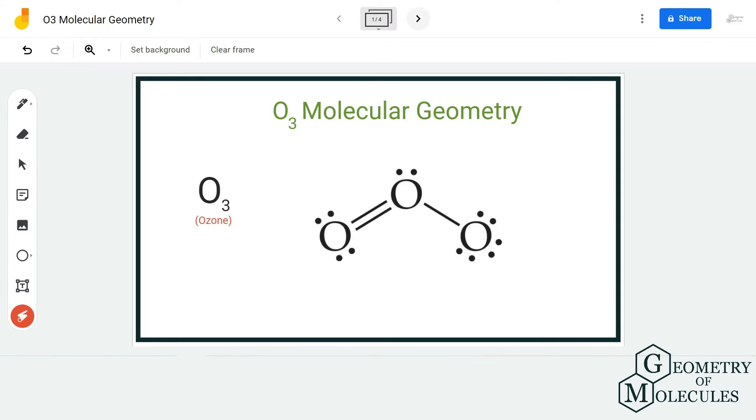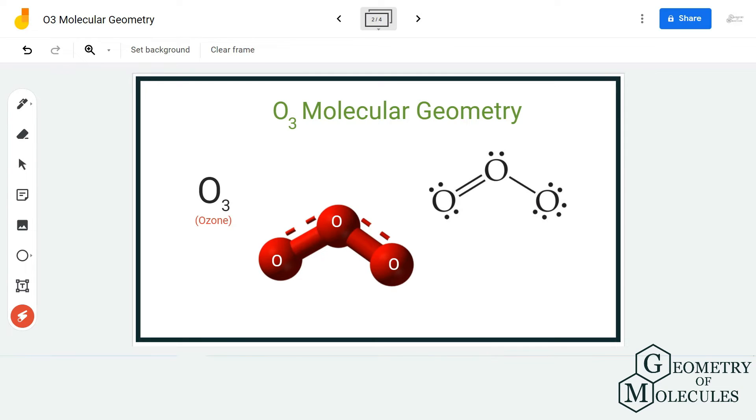To give you a better idea, we are also going to look at its 3D shape. If you look at its shape in 3D, you can see that the molecular geometry or the shape is bent. This is due to the lone pair that is present on the central oxygen atom over here.